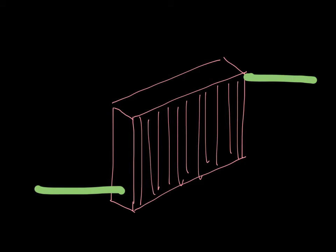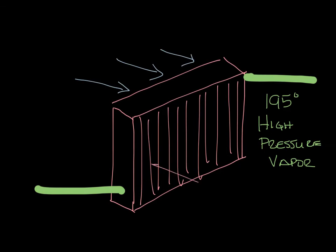So coming into the condenser, you have 195 degree high pressure refrigerant vapor. Air passes through the fins of the condenser and cools the 195 degree vapor down, which causes it to condense back into a liquid. The refrigerant leaves the condenser as a 110 degree liquid refrigerant. And the air that passes through the condenser warms up. So that's the condenser.